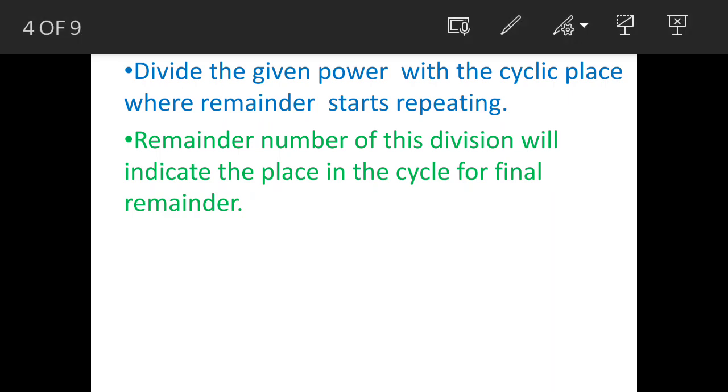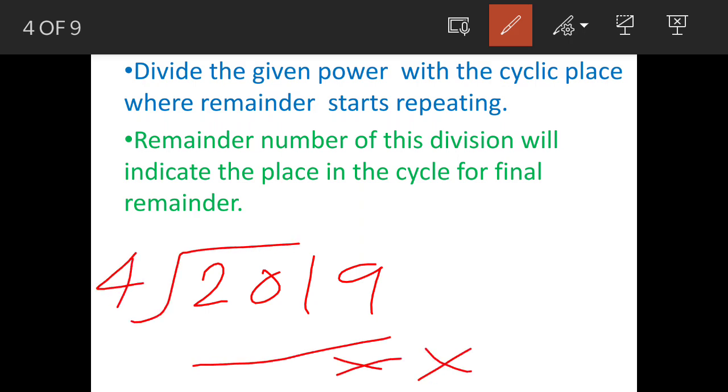When the remainder starts repeating, suppose at the 4th place the remainder is repeating, then we will divide 2019 with 4, and whatever remainder is obtained will indicate the answer.